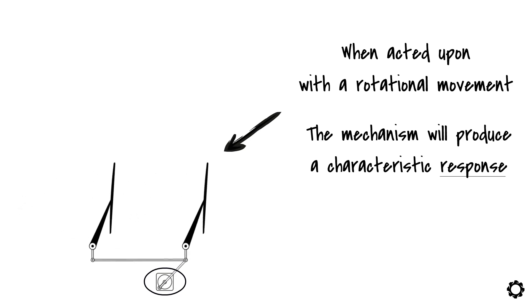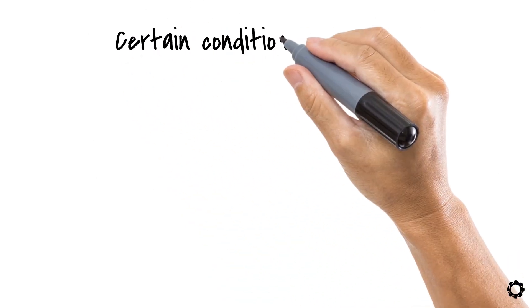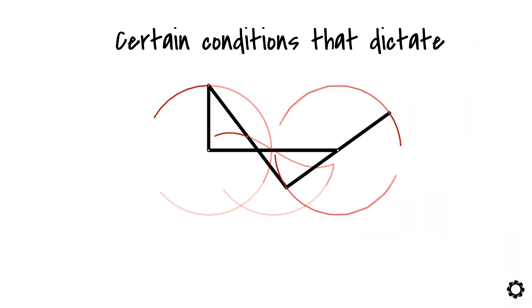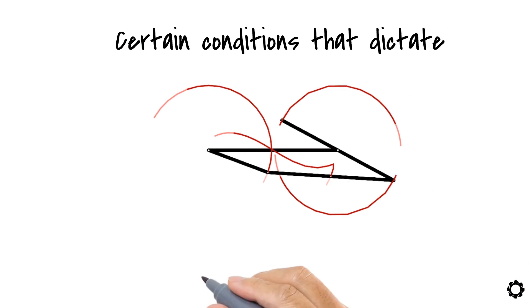Interesting, isn't it? Let me elaborate. These response movements to the rotational input are not random at all. There are certain conditions that dictate how the behavior of the 4-bar mechanism will be. One of these rules, or the laws, is the Grashof law.